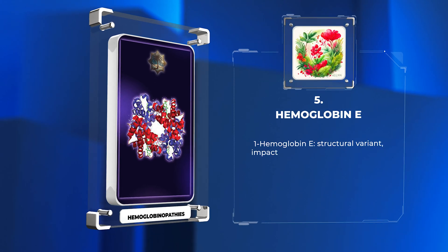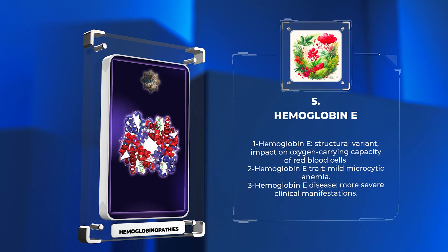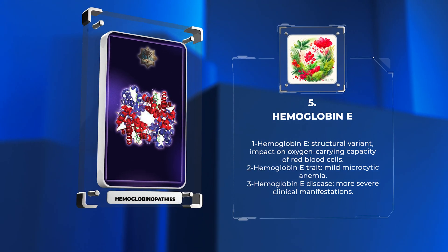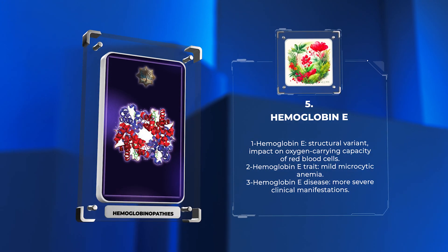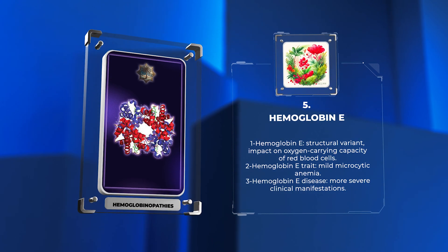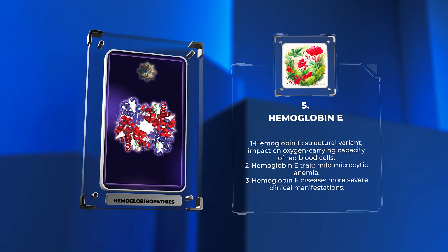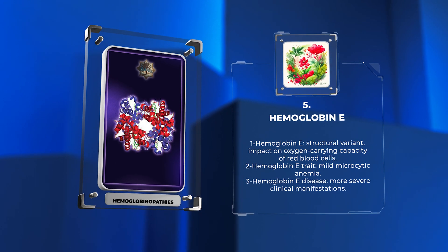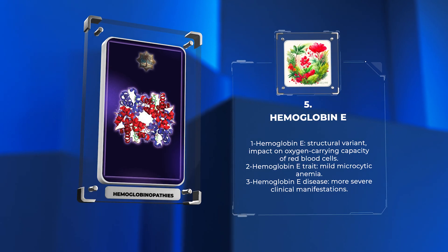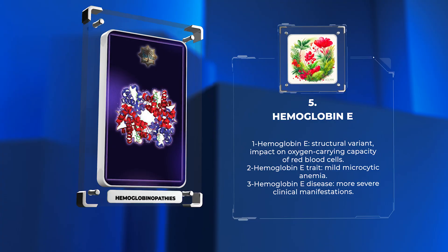Hemoglobin E is another structural variant of hemoglobin that can impact the oxygen-carrying capacity of red blood cells. Individuals with hemoglobin E trait exhibit mild microcytic anemia, while those with hemoglobin E disease may experience more severe clinical manifestations. We will discuss the molecular mechanisms underlying hemoglobin E and its clinical significance.